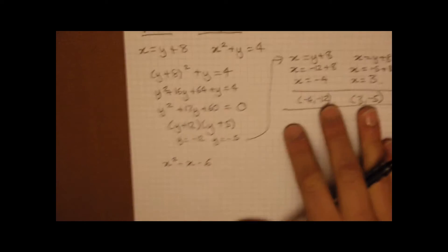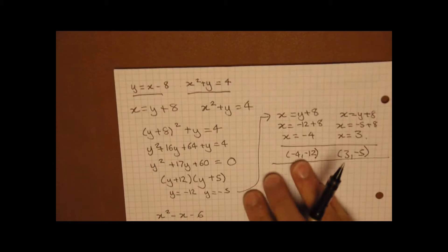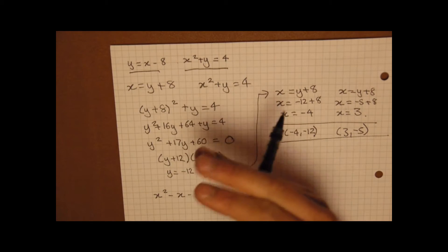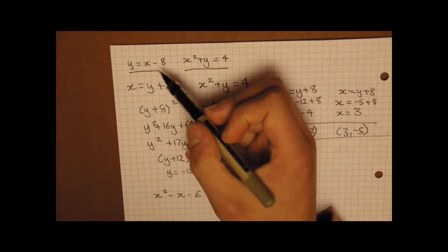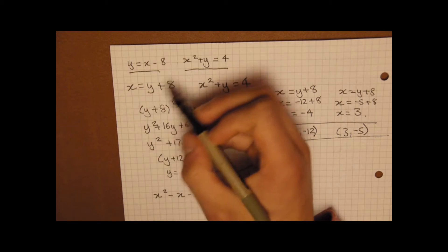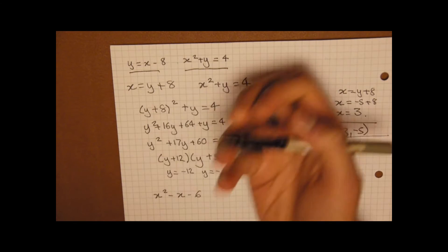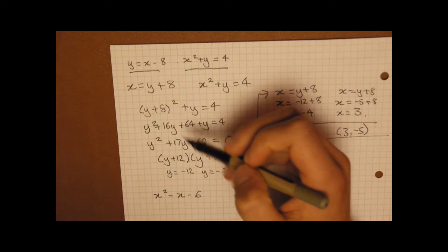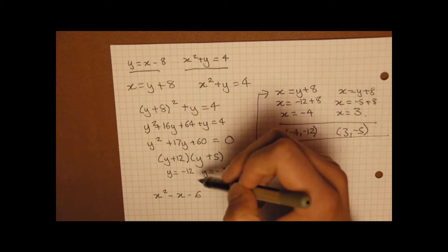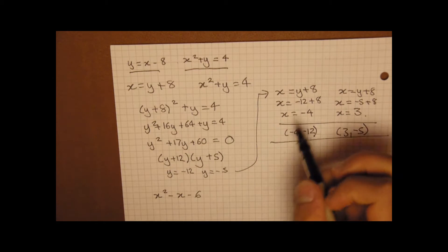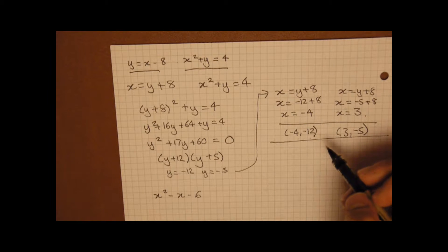So just to have a quick recap. What we've done is we've rearranged the equation to get it in terms of y in this case. And then we've substituted it into the other equation, expanded it, then we've factorized it to find our terms of y, and then we've worked out our terms of x from that.